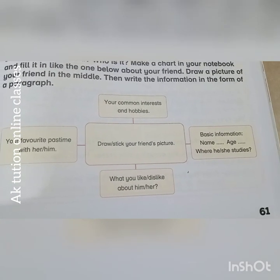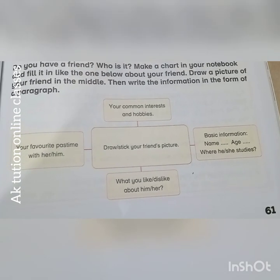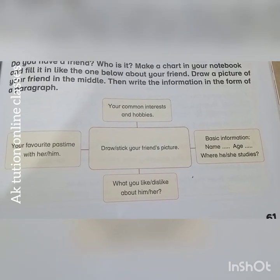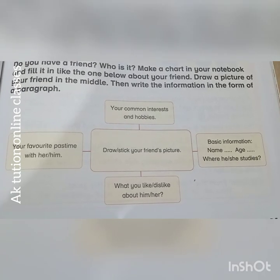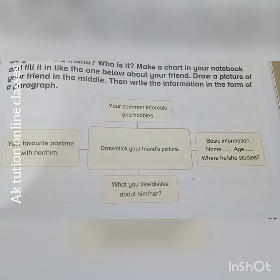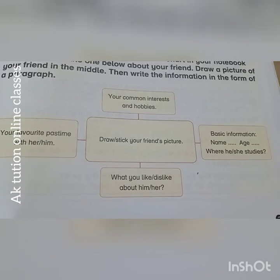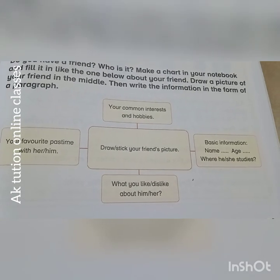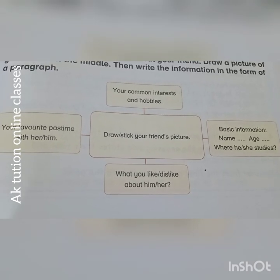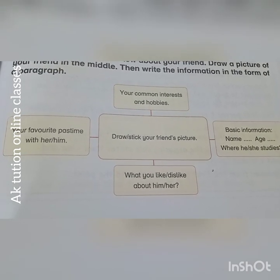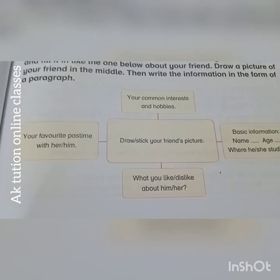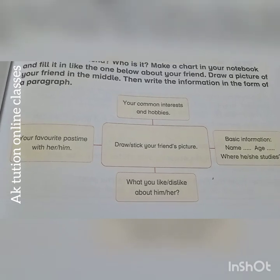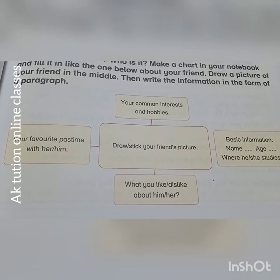Next is basic information: name, age, where he or she studies. For example, he studies with me at school. Then write what you like or dislike about him or her. For example: he speaks very loudly — this dislike about him. Your favourite pastime with her: when we went to the farmhouse with her family during summer vacations and we both came together with our families — that was our best pastime.